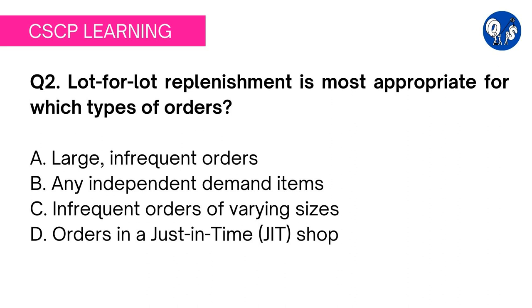Option A says lot-for-lot replenishment is most appropriate for large infrequent orders. This is not correct — lot-for-lot replenishment is simply a type of replenishment technique and has nothing to do with the size or number of orders. Option B says it is most appropriate for any independent demand items, but it can be used for both dependent and independent demand items.